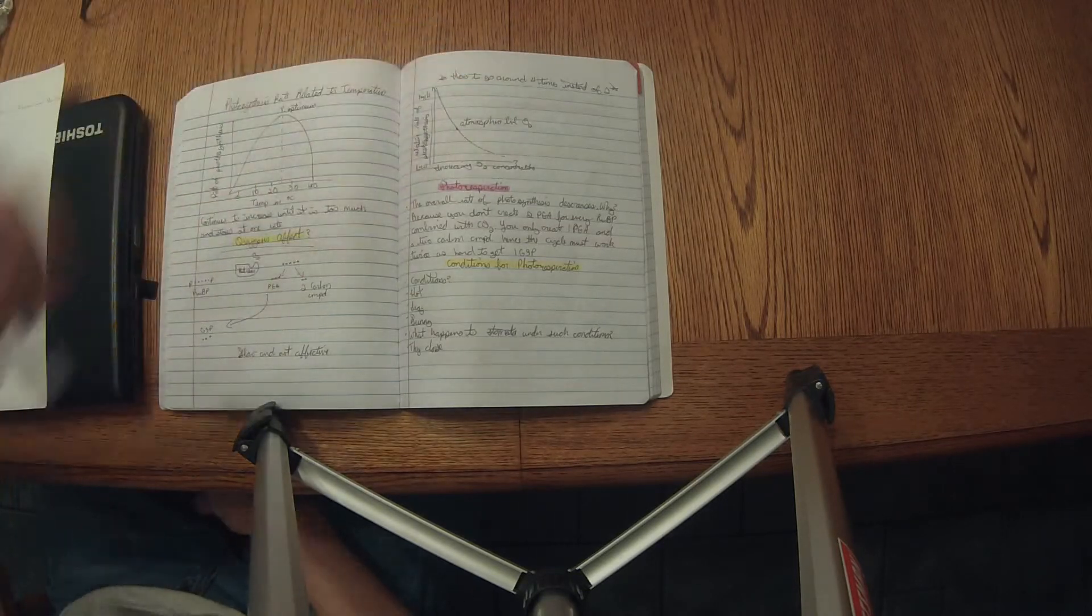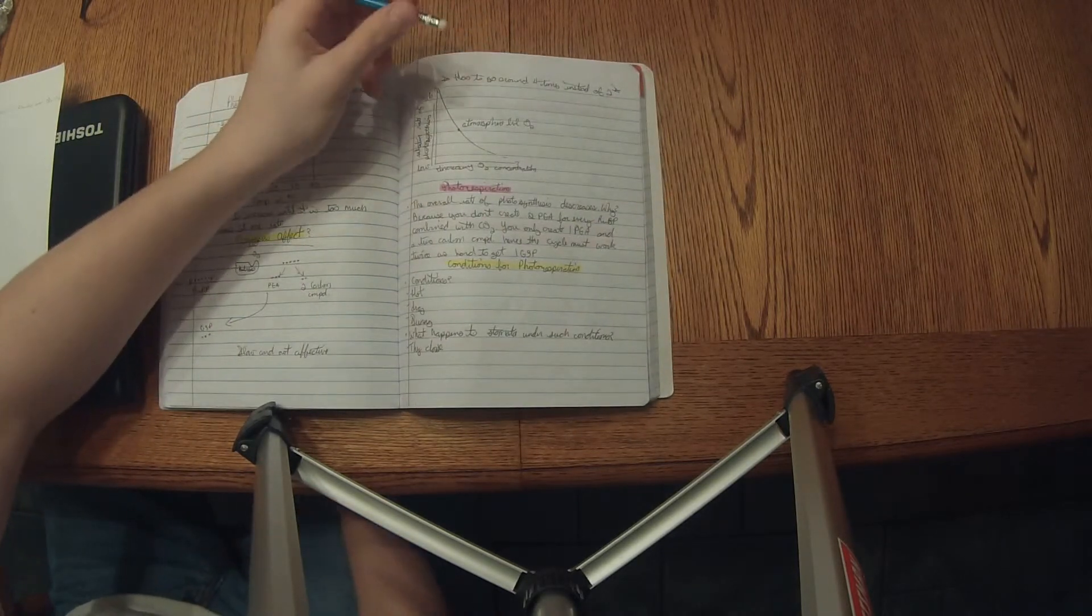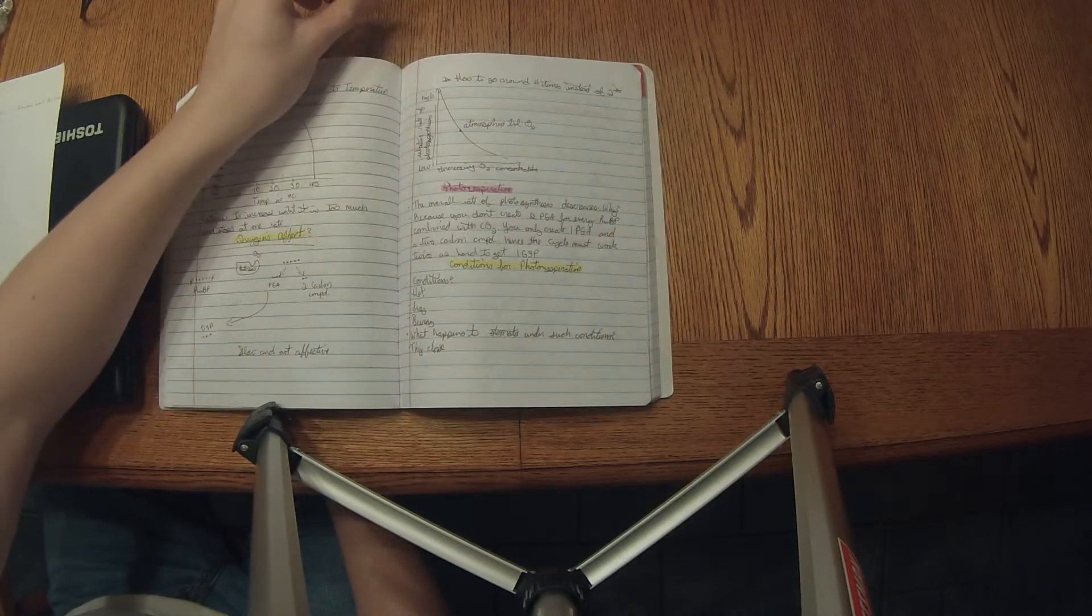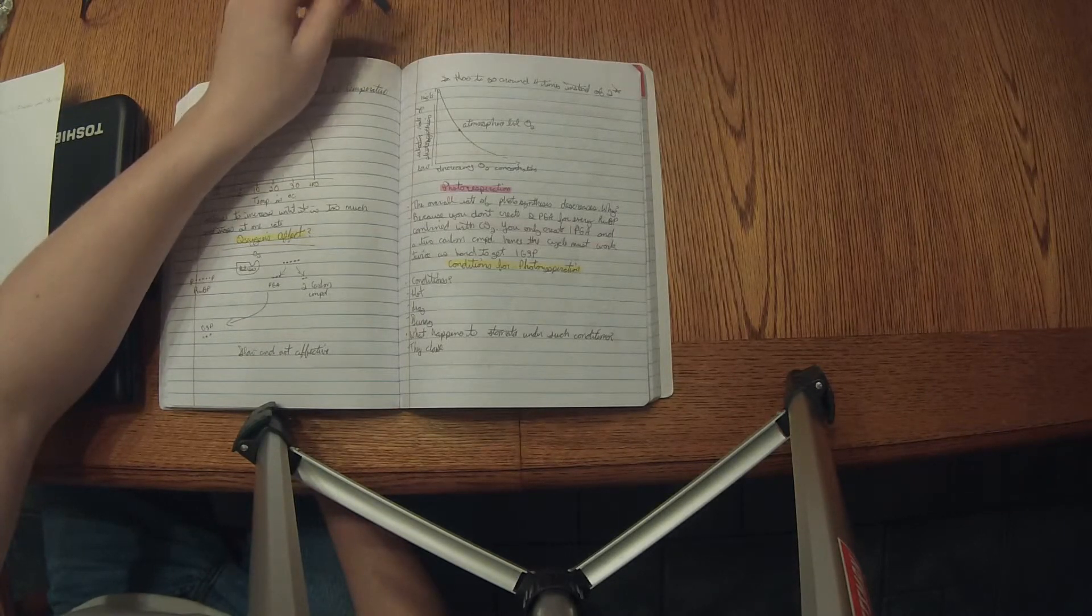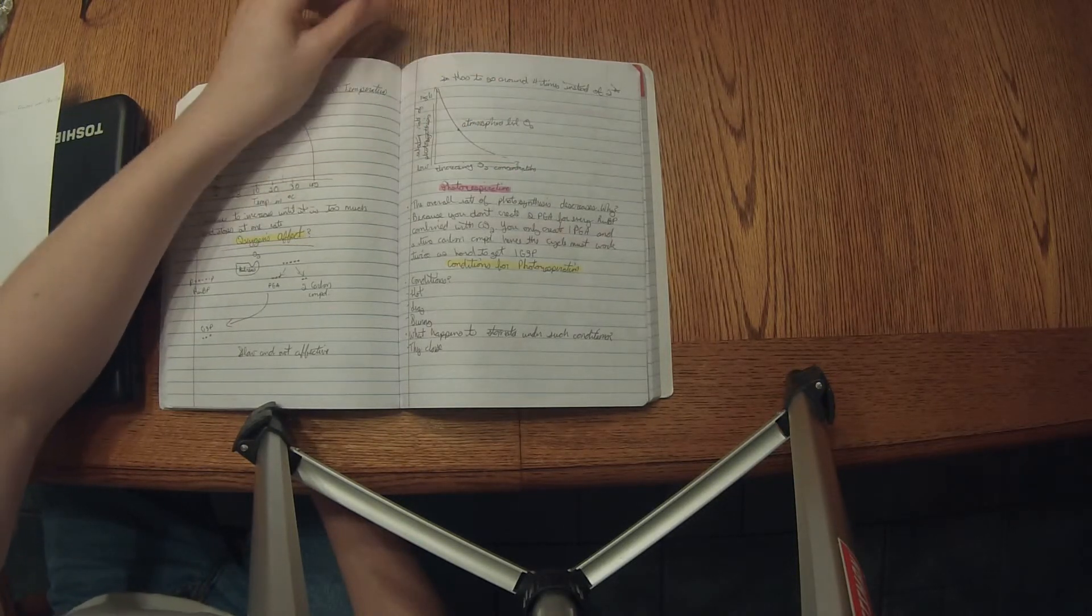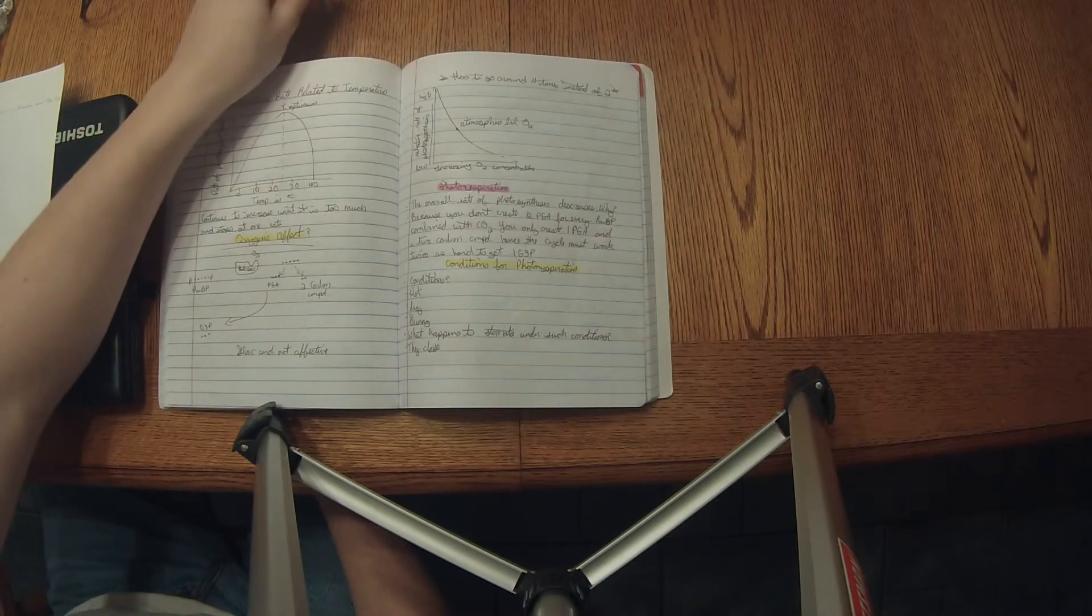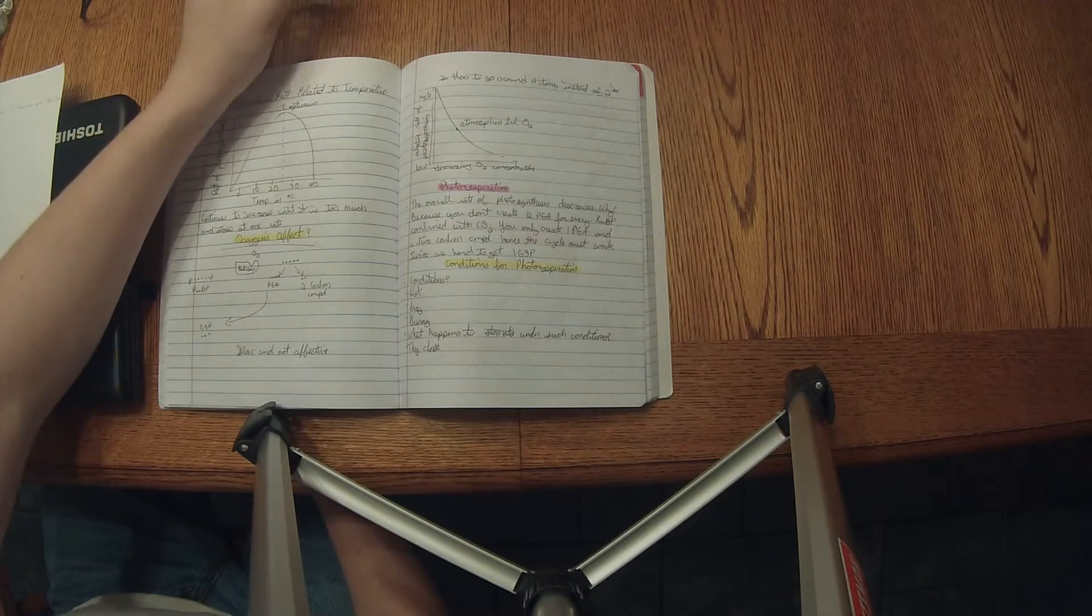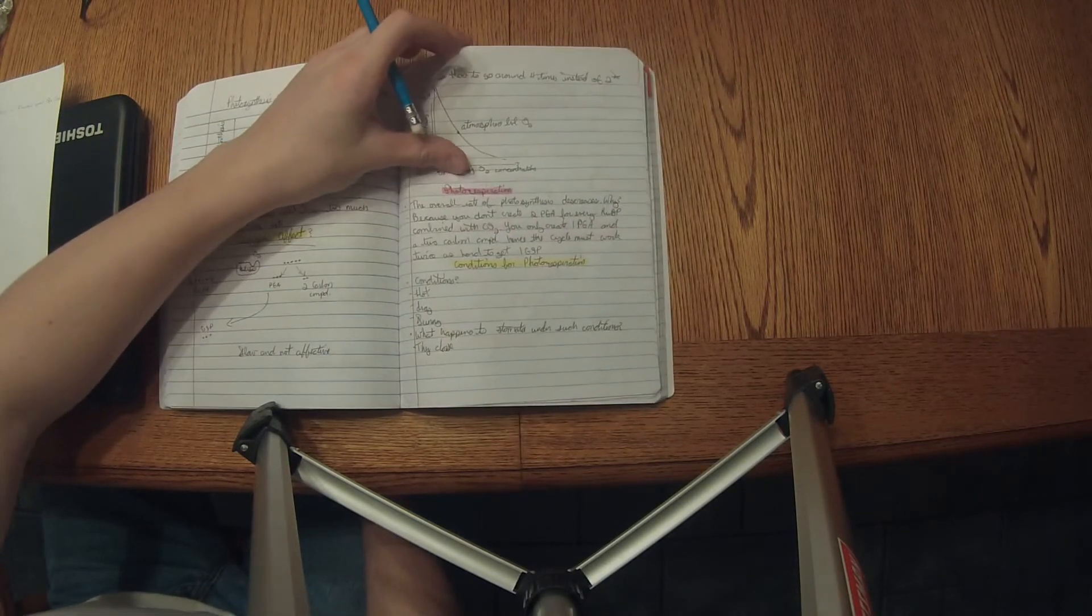Photorespiration. The overall rate of photosynthesis decreases and why? Because you don't create two PGA for every RuBP combined with CO2, you only create one PGA and a two-carbon compound. Hence the cycle must work twice as hard to get one G3P which in terms is slow and not effective. Conditions for photorespiration have to be hot, dry, sunny. What happens to the stomata under such conditions? They close.